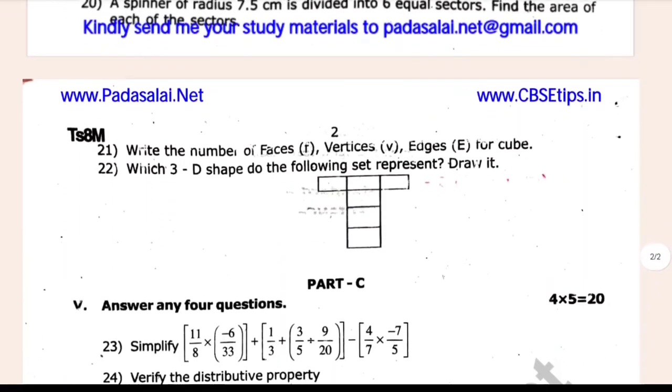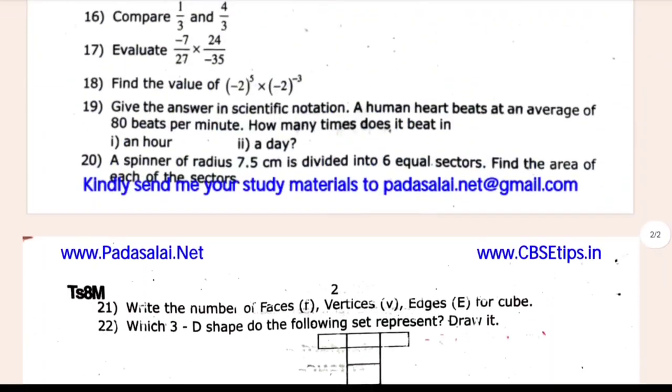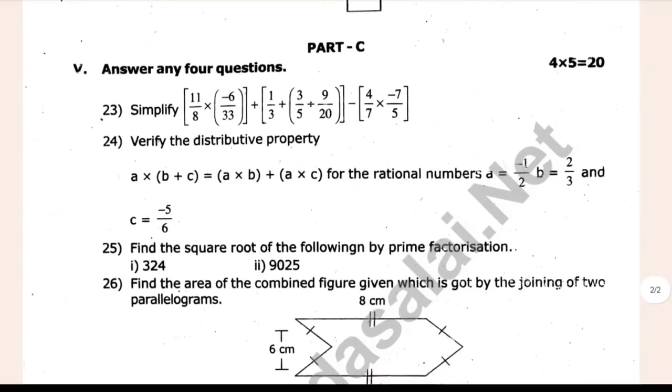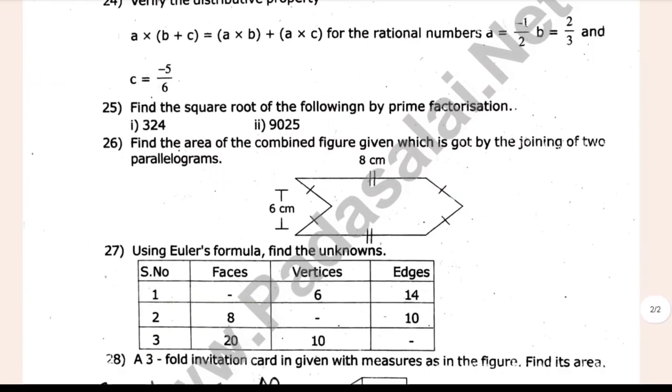21st to 22nd. Which 3D shape to the following set represent? 21st to get 5 mark. So add the 4 mark.